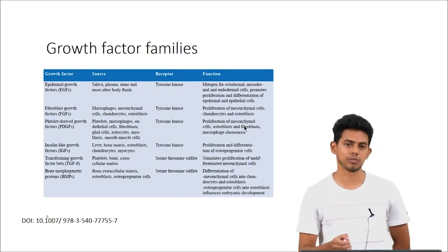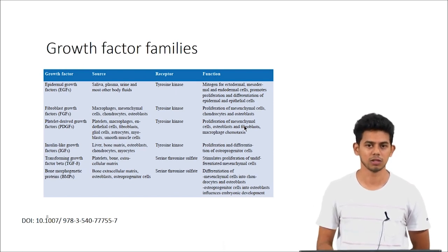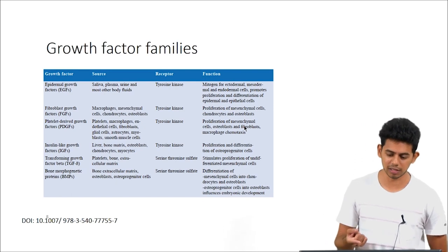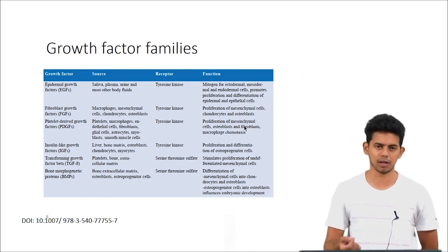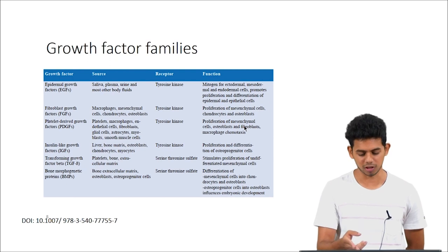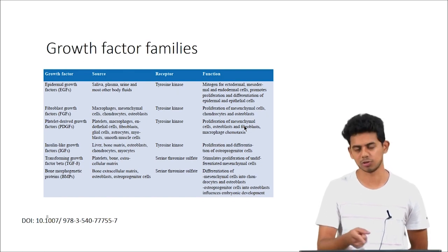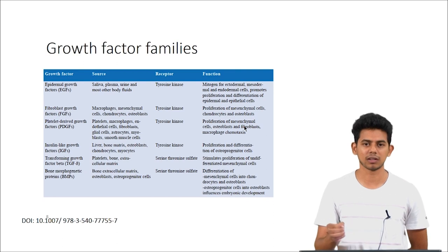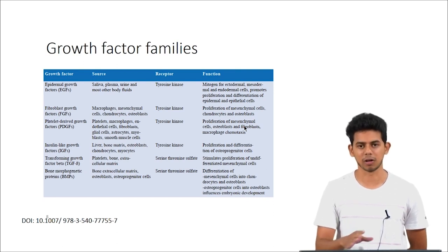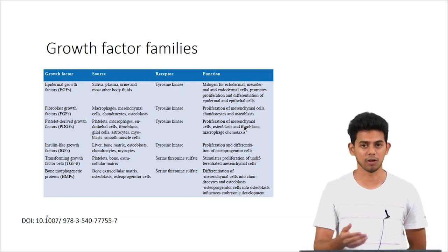This image shows common growth factor families, their source, receptor, and function. For example, epidermal growth factor (EGF) acts as a mitogen for ectodermal and mesodermal cells and also promotes proliferation of epithelial cells. This shows how growth factors can have a lot in common with mitogens and morphogens, while also having different effects on different cell types.